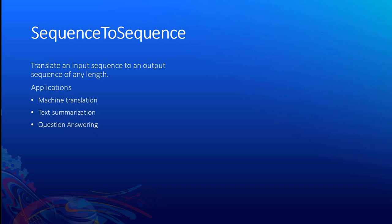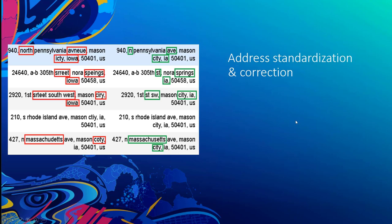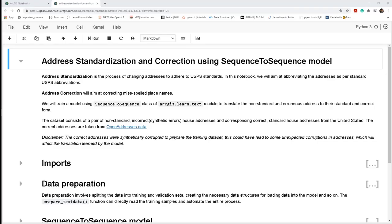Next is the Sequence-to-Sequence model. Sequence-to-sequence models are capable of translating an input sequence of a particular length to an output sequence of a different length. Due to this capability, it fits many applications: machine translation, text summarization, question answering, and more. Now let's look at a demo where we use the sequence-to-sequence model to standardize and correct incorrect addresses.